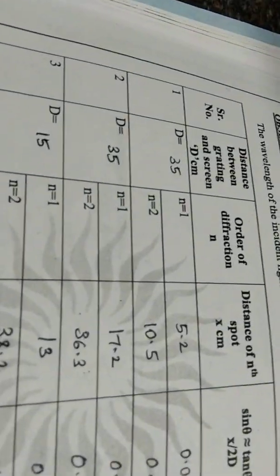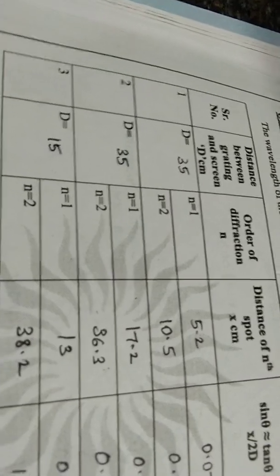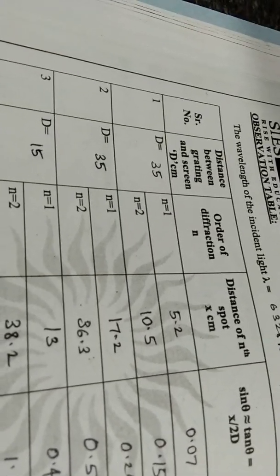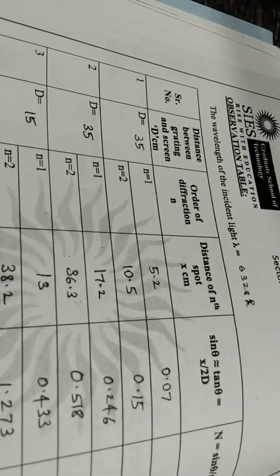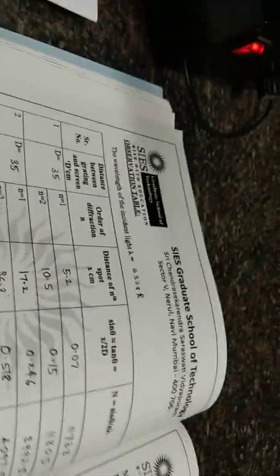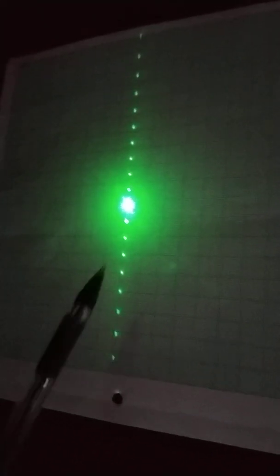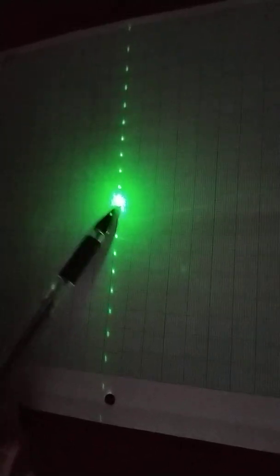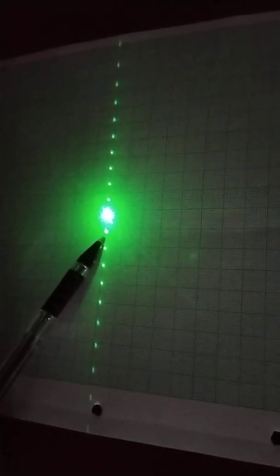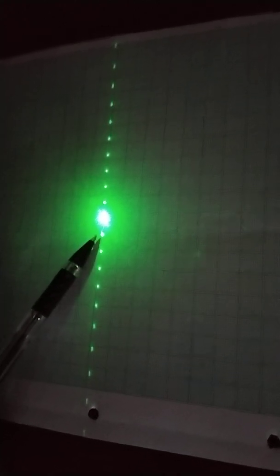I am going to adjust the distance of this grating sheet from the screen, which we measure as capital D — the distance between the grating and the screen — and we keep it as a fixed distance. We have to draw the spots on the screen, so I need to put a graph sheet or a plane sheet here and mark these circles, whatever we are able to see on the screen.